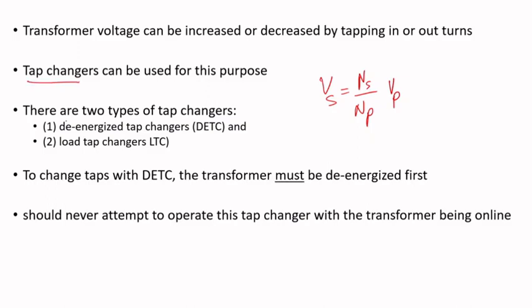There are two types of tap changers. One category is called the de-energized tap changer, sometimes abbreviated DETC. These are de-energized tap changers, meaning you have to de-energize the transformer first before making the tap change. The second type is the load tap changer, sometimes abbreviated LTC or OLTC.